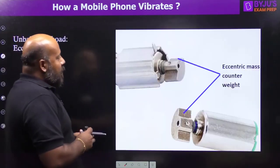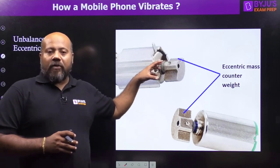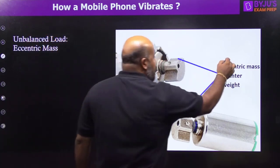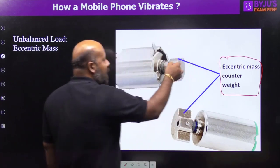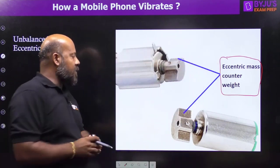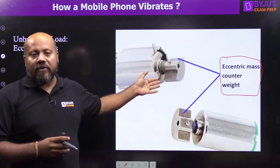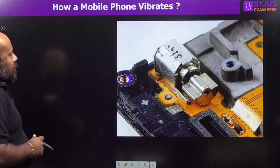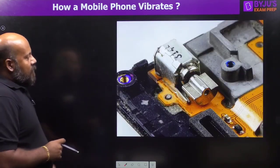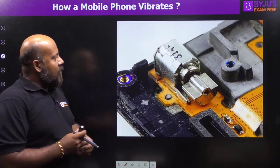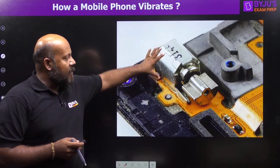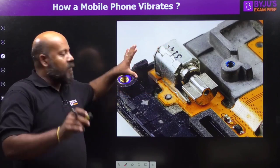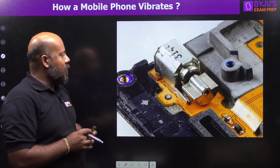Your DC motor with unbalanced load looks something like this. This is the eccentric mass counterweight — you can easily observe that it is unbalanced. And if you see how it is actually placed inside the phone, here is a very zoomed-in picture so that you can identify this motor.